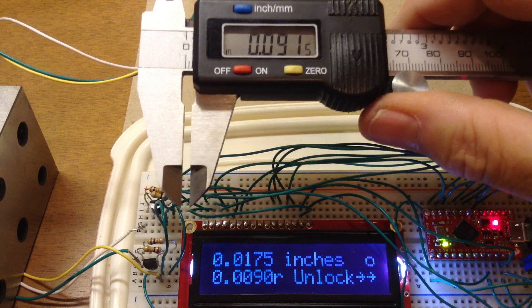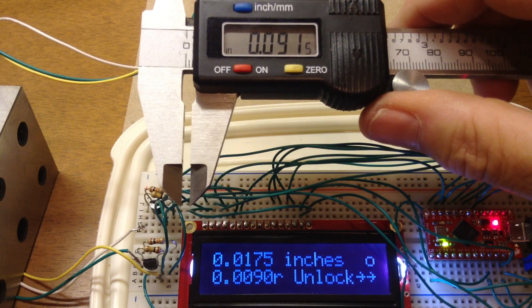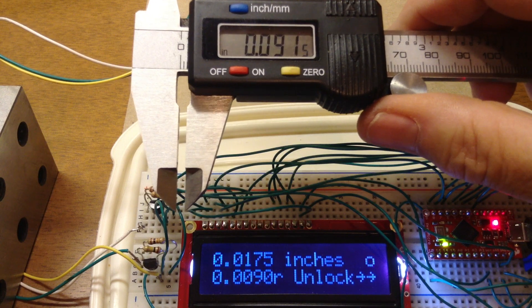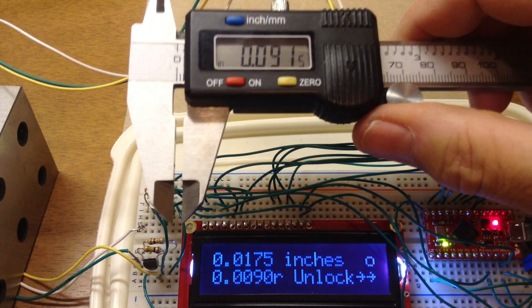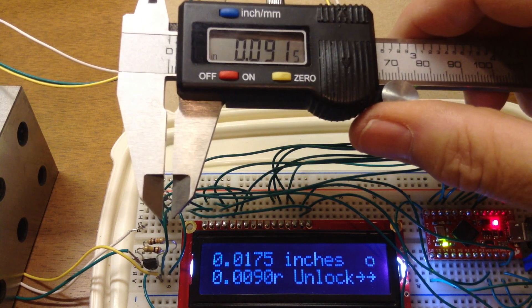At all times I'm displaying half of the reading below it. If I'm measuring a diameter, then that's telling me the radius at all times, rounded to the nearest half a thou.